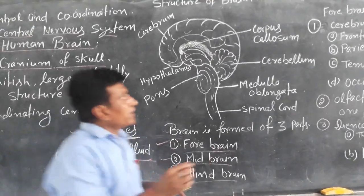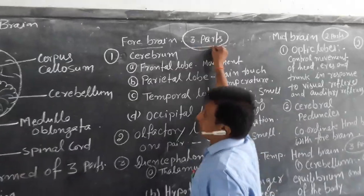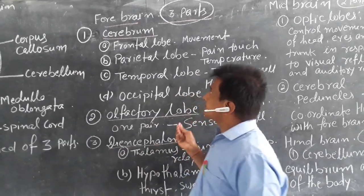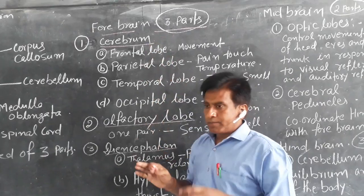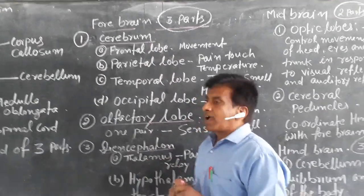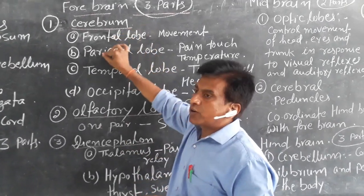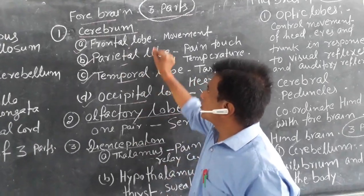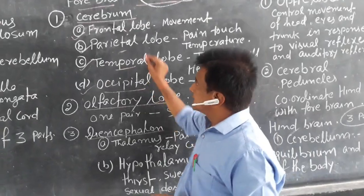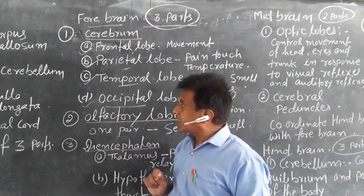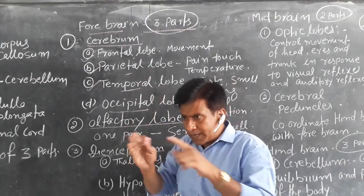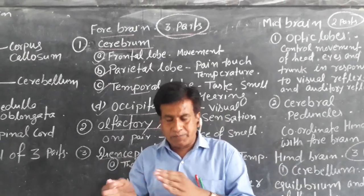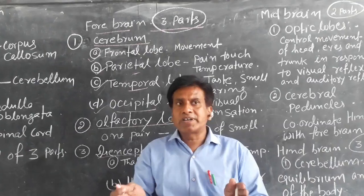We will talk about the forebrain first. The forebrain is made up of three parts: the first part is cerebrum, the second part is olfactory lobe, and the third part is diencephalon. The cerebrum is the major part of the human brain and it is divided into right hemisphere and left hemisphere.